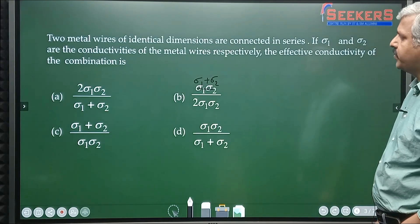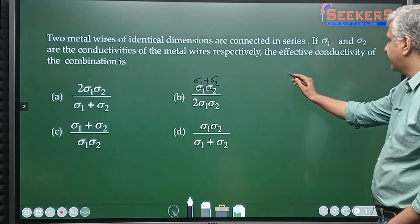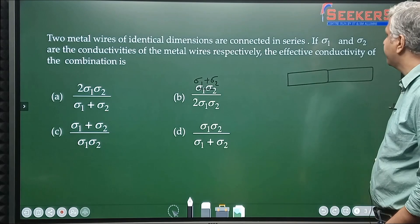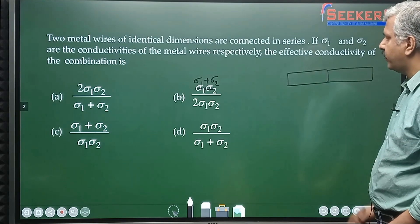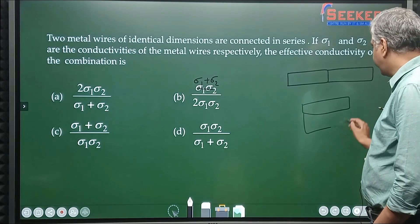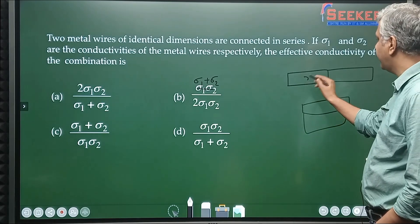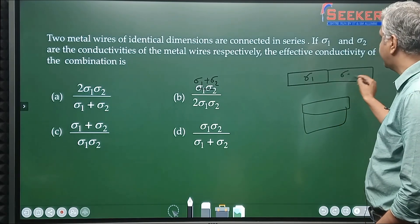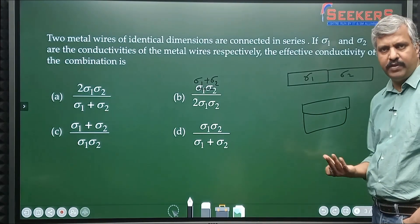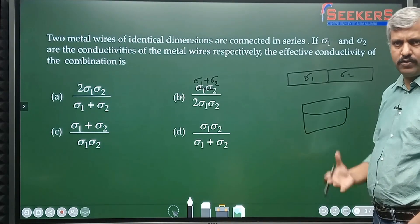Here is another question: Two wires of identical dimensions are connected in series. If σ1 and σ2 are the conductivities of the two wires, previous question they were connected like this, now they are connected like this. The effective conductivity of the combination is? Same technique I will use. If σ1 is equal to σ2, the effective conductivity should be σ1.